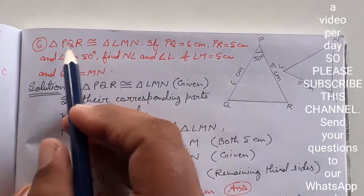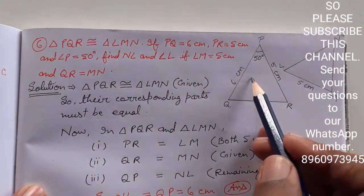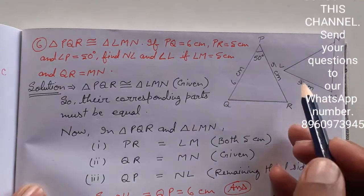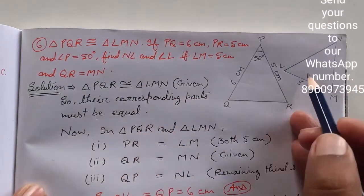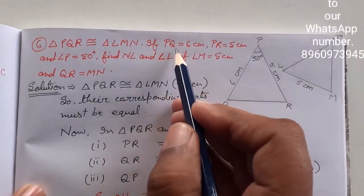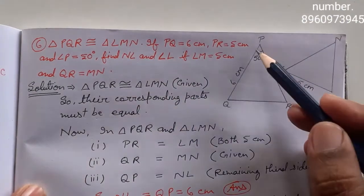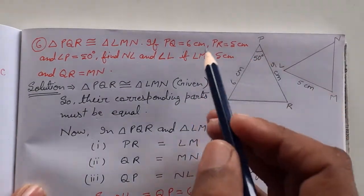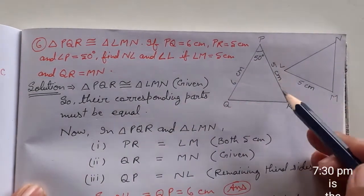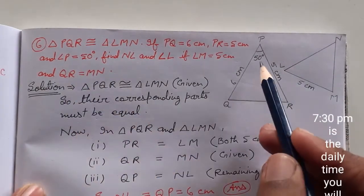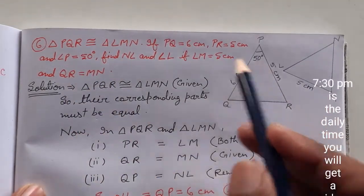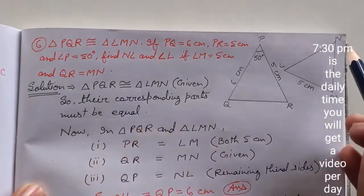Triangle PQR is drawn in front of you, which is congruent to triangle LMN. Congruent means similar. The given information is: PQ equals 6 cm, PR equals 5 cm, and angle P equals 50 degrees.